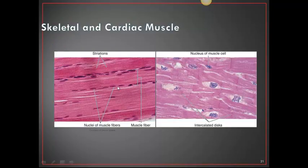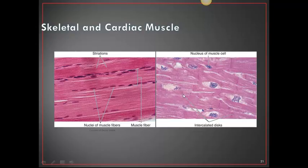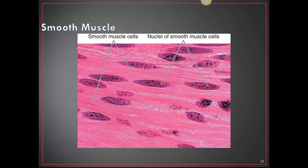Here are pictures of skeletal, cardiac, and smooth muscle. Skeletal muscle shows heavy, dark striations with nuclei visible within. Cardiac muscle has lighter striations and features intercalated discs or bands, which are only present in cardiac muscle. Smooth muscle shows very limited striations with nuclei centrally placed within the muscle fibers.